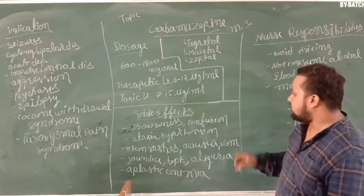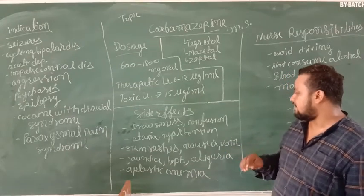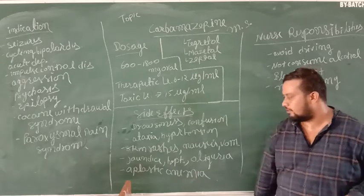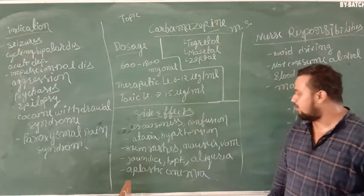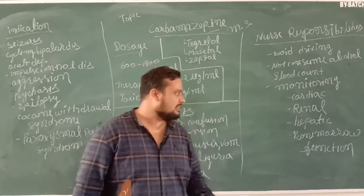Side effects: drowsiness, confusion, ataxia, hypertension, skin rash, nausea, vomiting, jaundice, hepatitis, oliguria, aplastic anemia. So these are the side effects of Carbamazepine mood stabilizer.